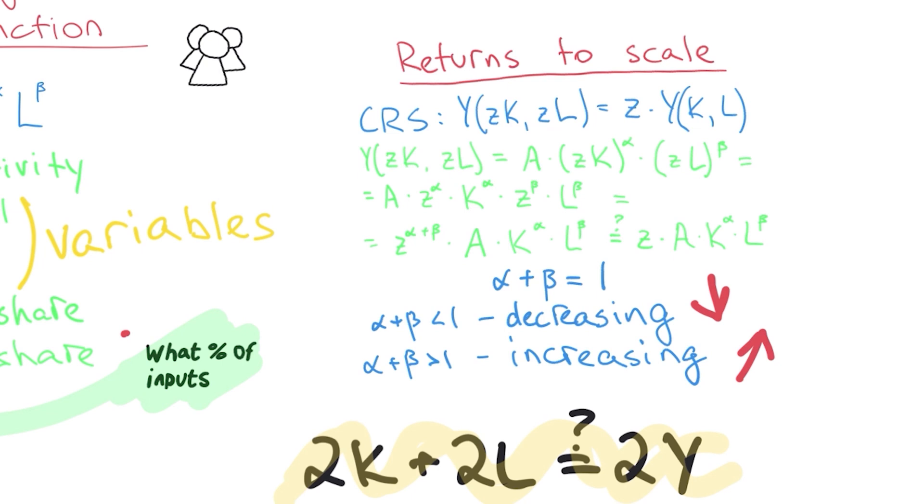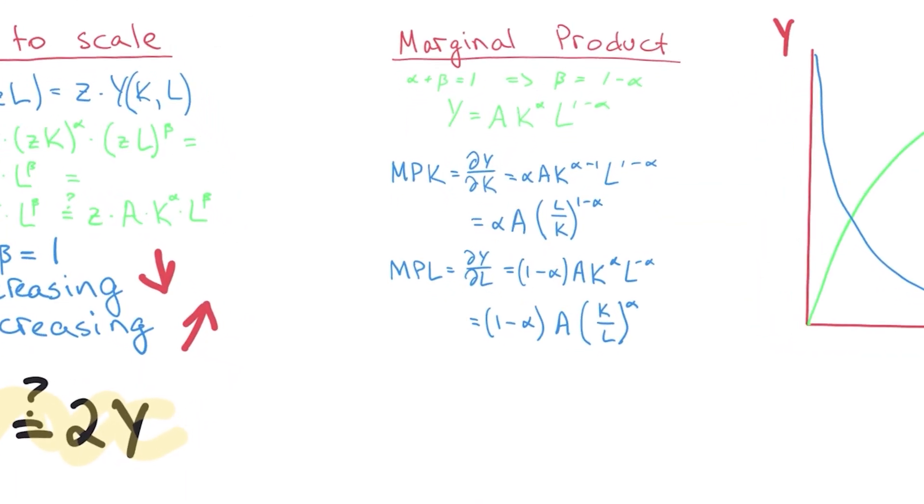And the same thing with increasing returns to scale. A good example for this is an IT company. So if it's a small IT company and they only have two workers, two developers, and they double the developers, then for example they hire a product owner and a salesperson, then they're gonna do much better because all of a sudden they're gonna be able to be more competitive in their field. So those are the two examples I like. Let's go on to the next thing, something called marginal product.